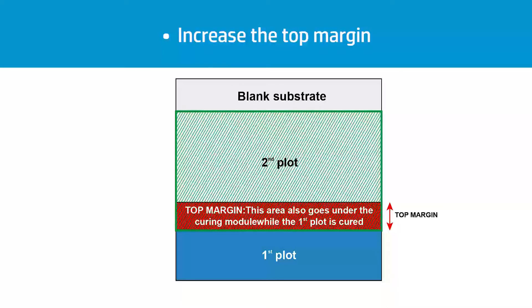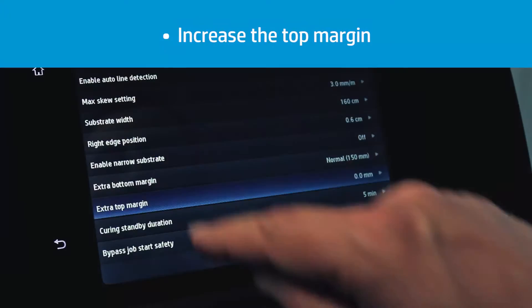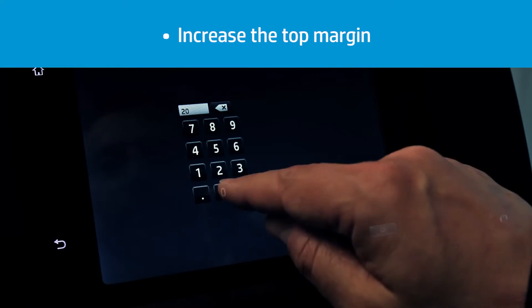Increasing the top margin will avoid printing on the parts of the substrate that are passing twice under the curing module. Obviously, this top margin will be a waste of substrate.